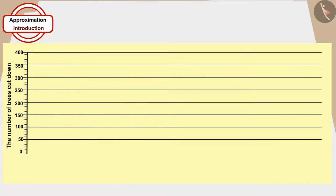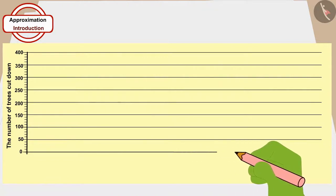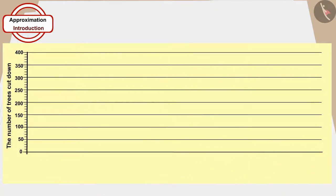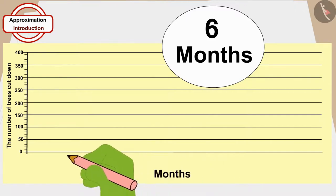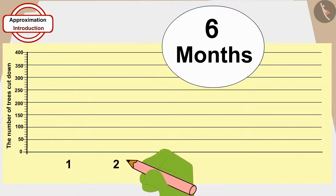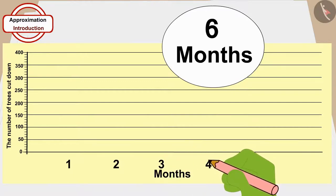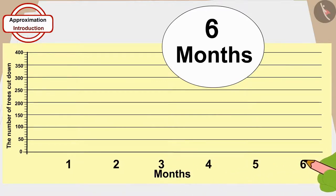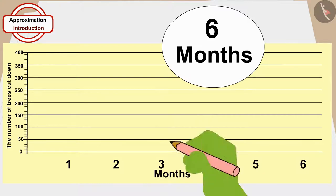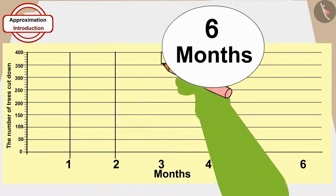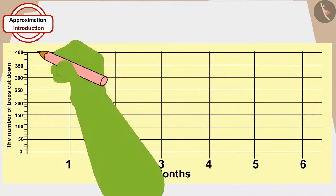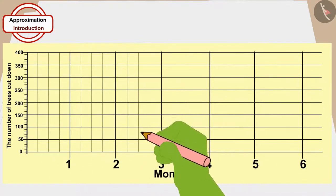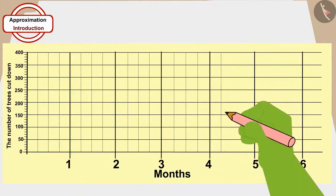Now, at the horizontal line drawn at 0, he drew vertical lines at equal distance numbered 1 through 6, because he was going to count the number of trees that had been cut every month for six months. And finally, he drew three vertical lines at equal distance between the numbered vertical lines.